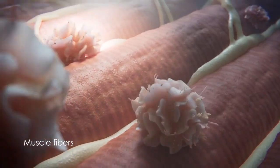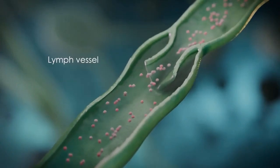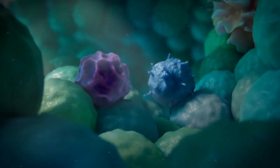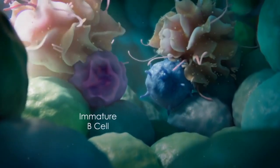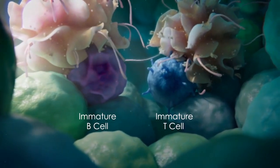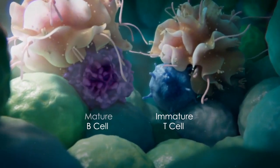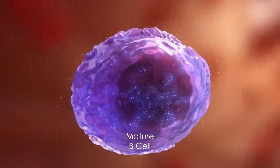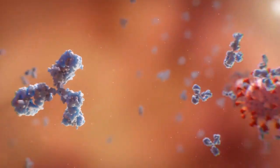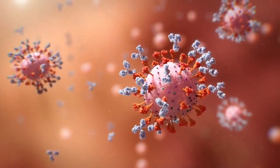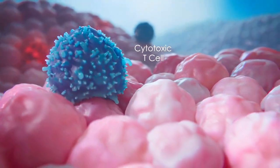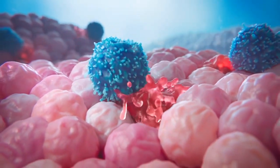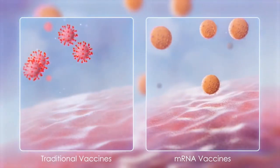Antigen-presenting cells travel back and forth between the tissues they patrol and nearby draining lymph nodes. When they arrive in a lymph node, APCs present any antigens they've picked up on patrol to immature B and T cells. If one of these B or T cells is able to recognize a presented antigen, it will develop into a mature B or T cell. Mature B cells secrete proteins called antibodies that can bind to and neutralize the pathogen. Cytotoxic T cells, on the other hand, seek out the source of the infection and eliminate any infected cells before they can be exploited to produce more of the pathogen.